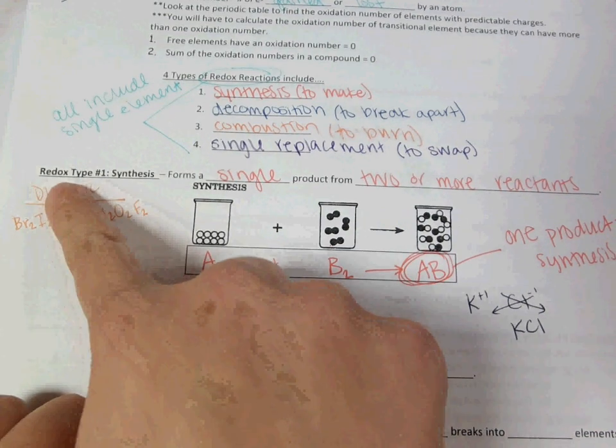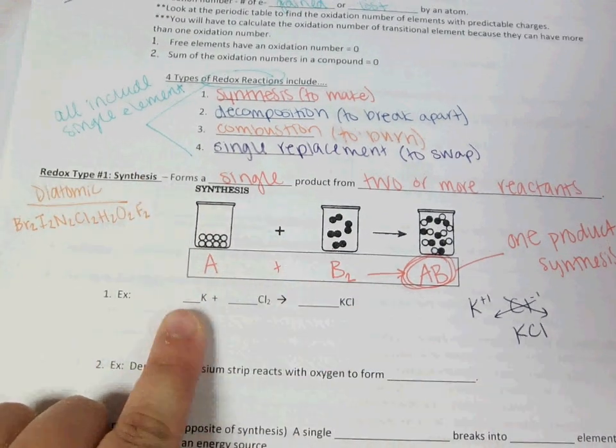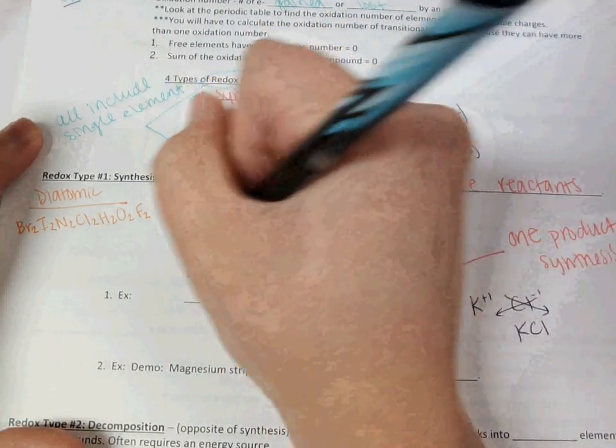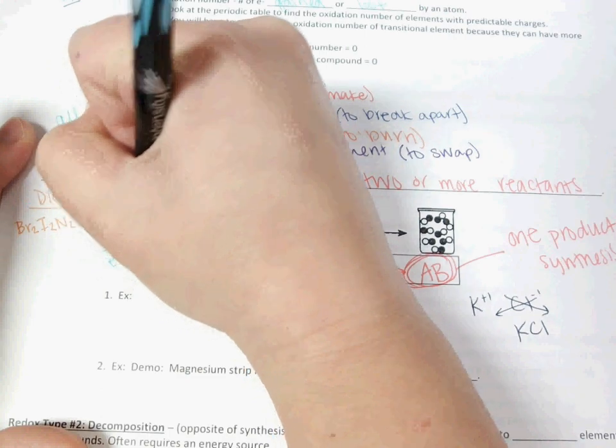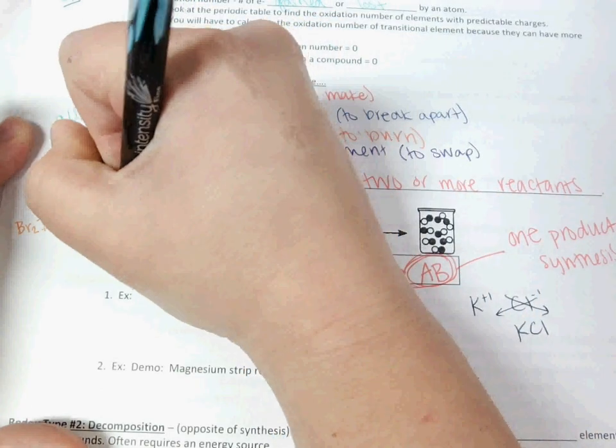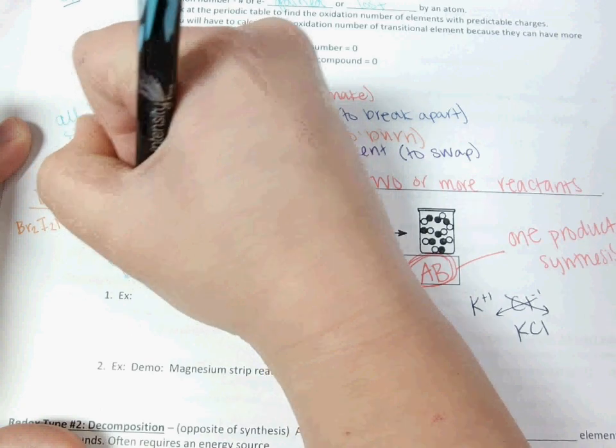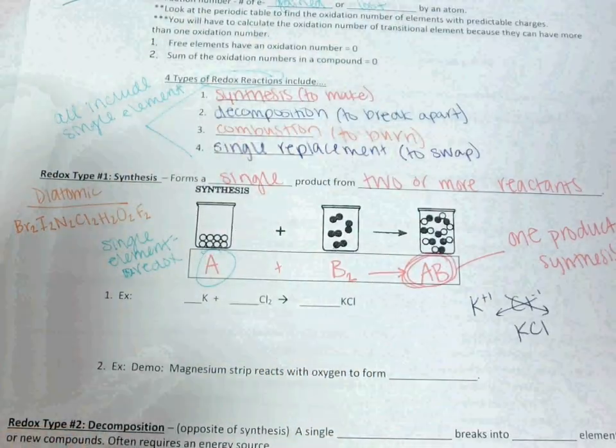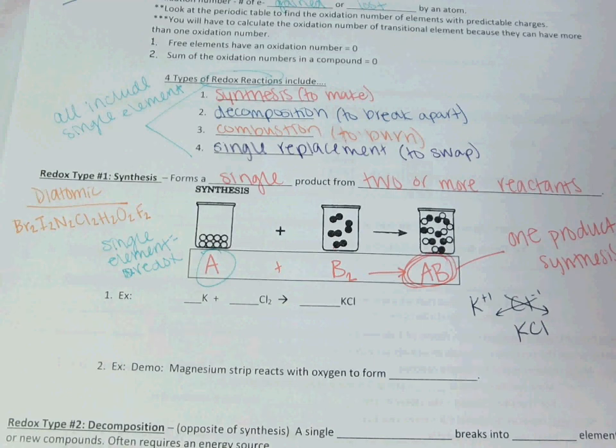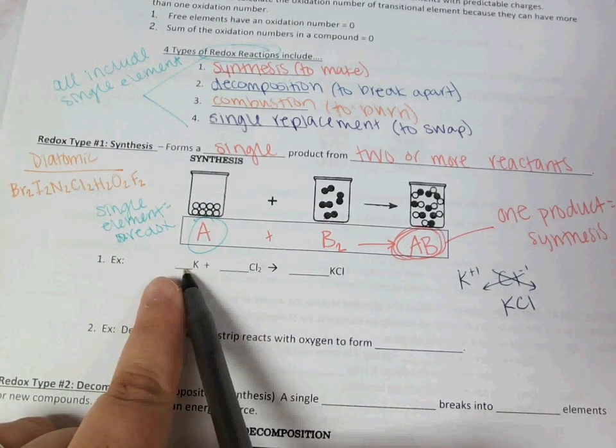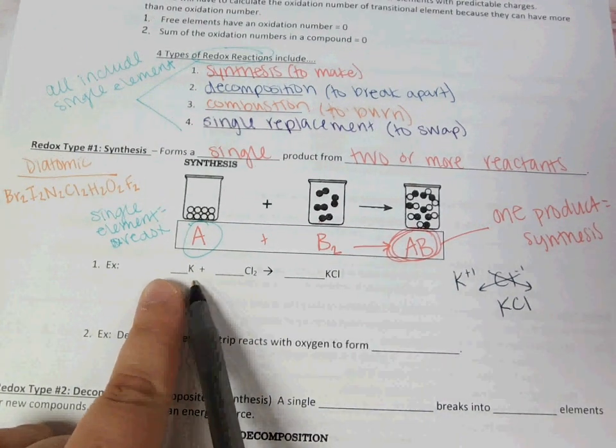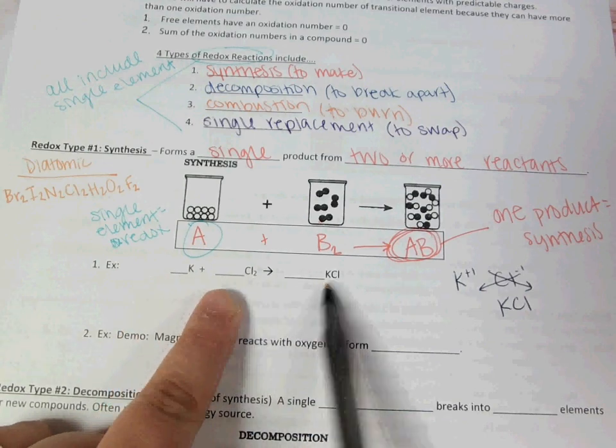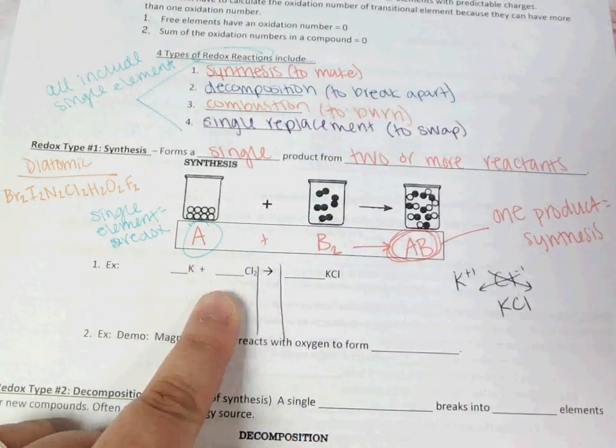It's both a redox reaction and a synthesis reaction. The redox is kind of like the umbrella term. The fact that there is a single element tells you that you would classify it as redox. In this example, single element tells me I'd classify it as redox. The fact that I made a single product tells me I'd classify it as synthesis. It's not actually balanced, so I would balance this the exact same way that I balanced my previous ones.